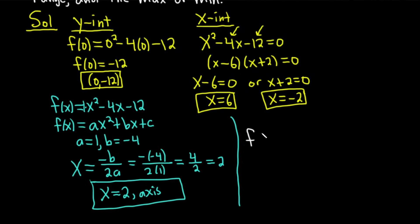Then we have f(2) = 2² - 4 times 2 - 12. So f(2) = 4 - 8 - 12. So it's going to be 4 minus 8 minus 12. So f(2) = 4 - 20. So it's going to be -16.